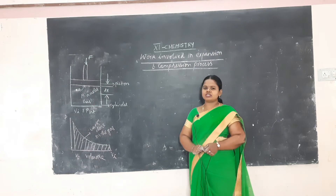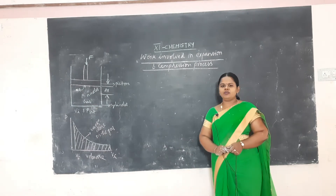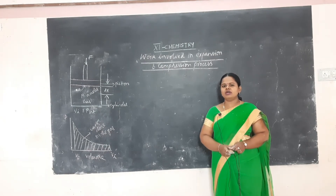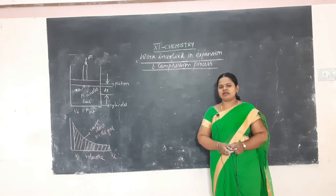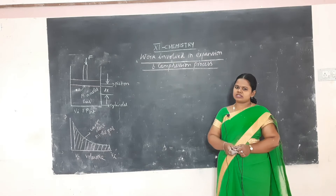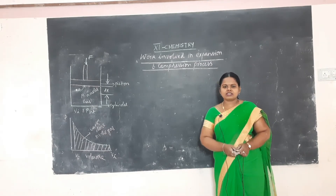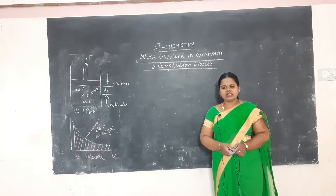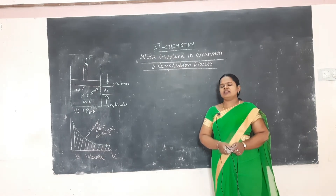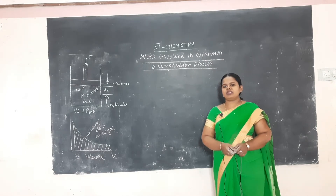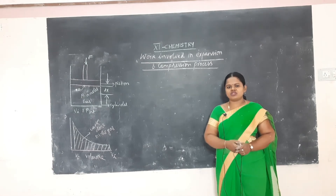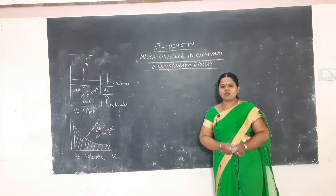Good morning everyone. We are learning the important terms used in thermodynamics. We have learned about a system, surrounding, boundary, and the different types of systems: isolated system, closed system, open system. We also covered thermodynamic processes such as reversible, irreversible, adiabatic, cyclic, isothermal, isobaric, and isochoric processes. We discussed extensive property, intensive property, state function, path function, internal energy, free energy, enthalpy, Gibbs free energy, and entropy.